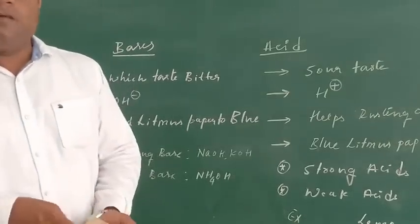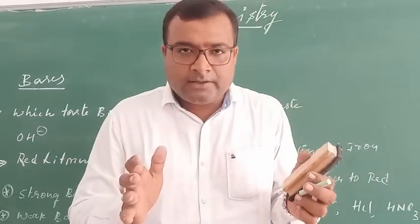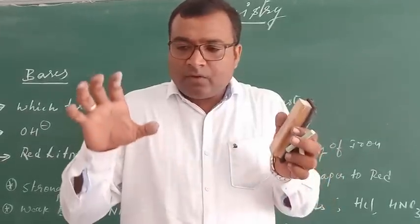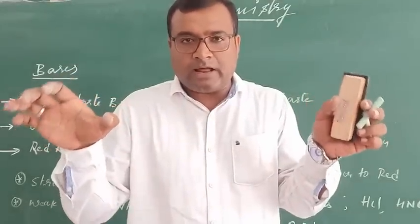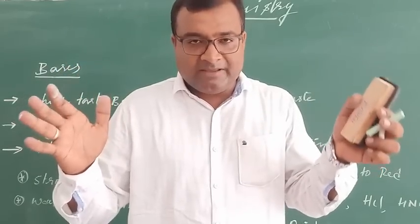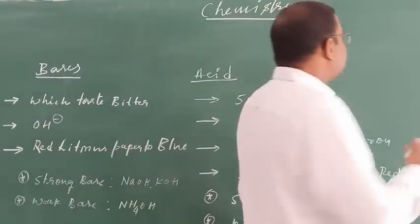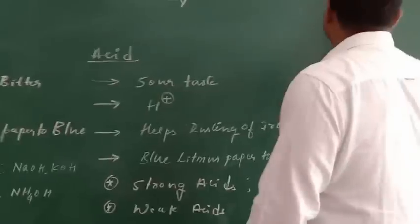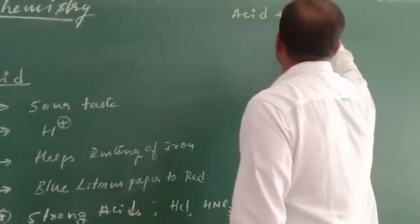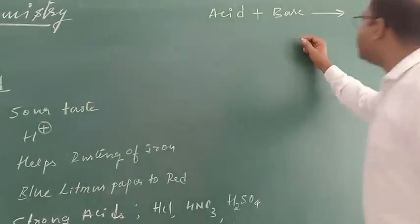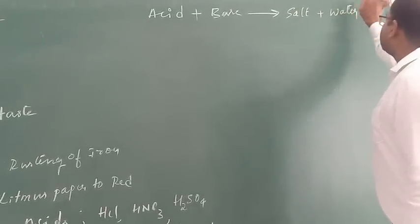Next we will go to salts. Before that, let us understand how a salt is formed. Salt is a new product obtained when an acid is treated with a base. When equal or equimolar quantities of equal-strength acid and base are reacted, there will be formation of salts. The generalized reaction is: acid plus base gives salt plus water.